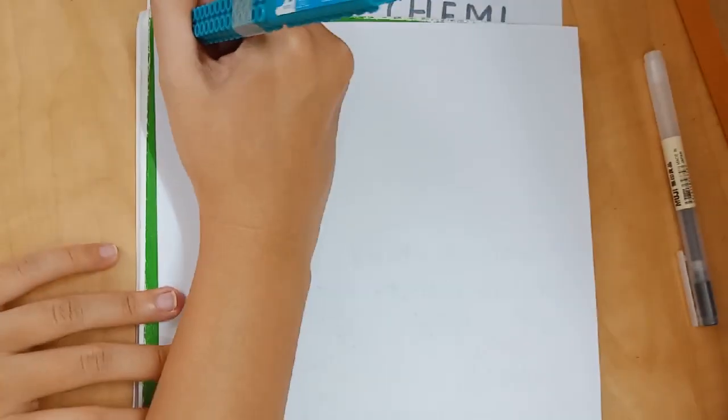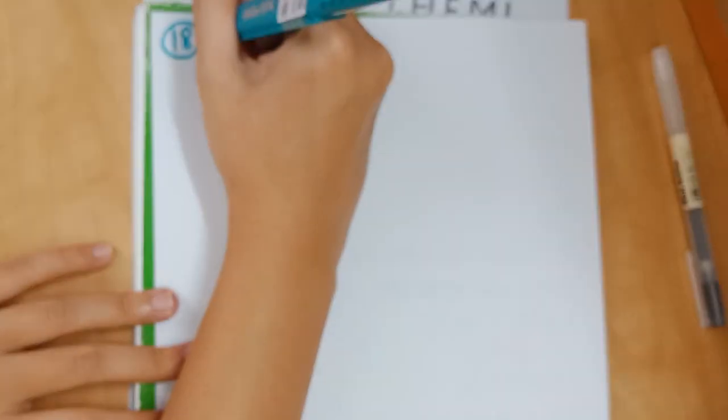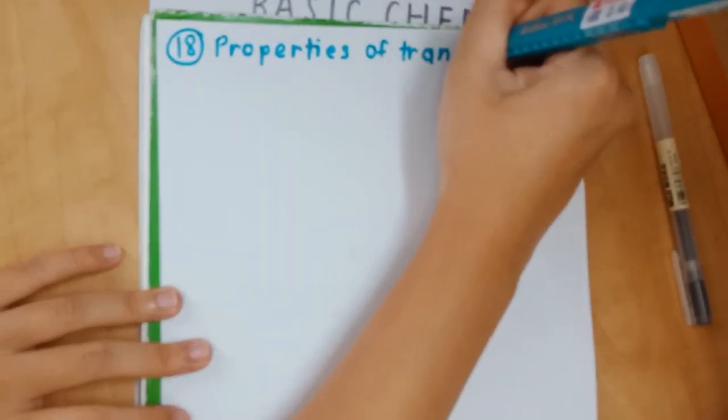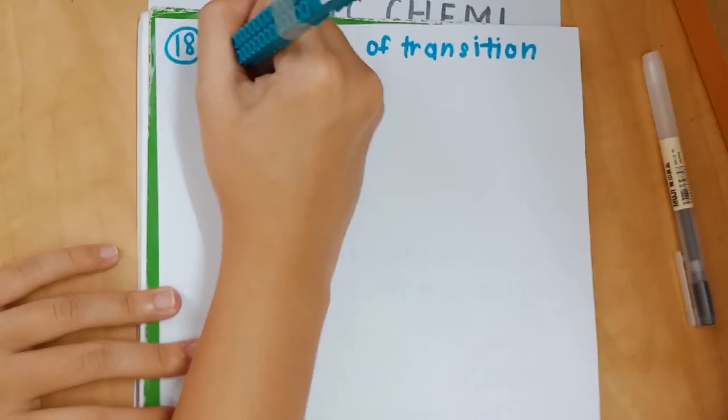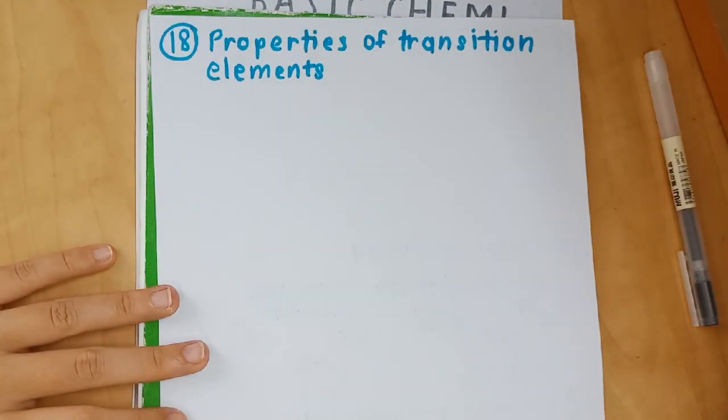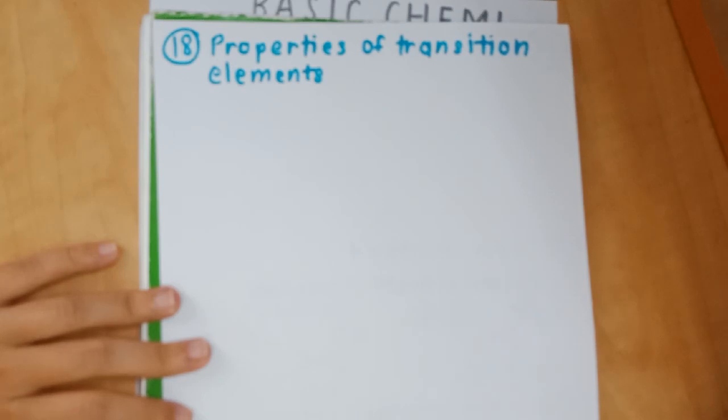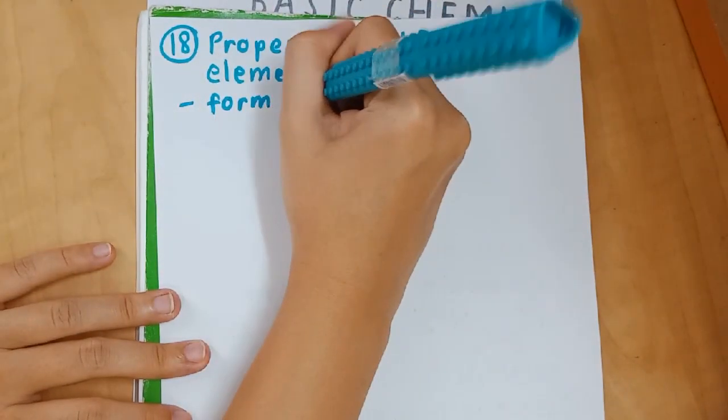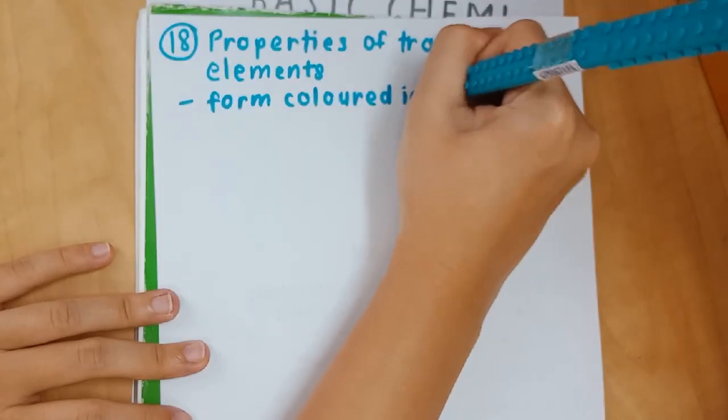Number 18: the properties of transition elements is another popular question. The concepts I included in this video, apart from being stuff you need to know to do chemistry, I also tried to include popular questions - meaning the stuff you really need to know. Transition elements are another popular question and there are three properties you need to remember.